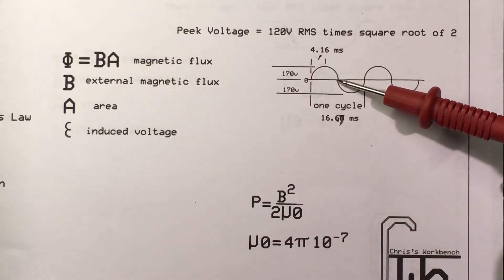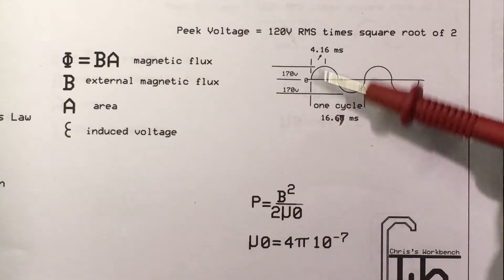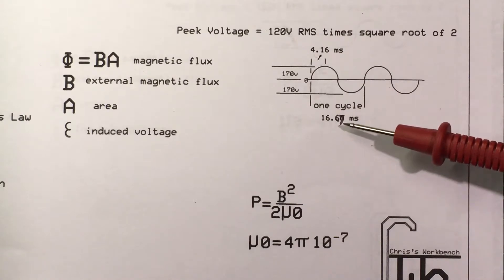Then back down to zero, and then it rises up in the other direction to 170 volts in about four milliseconds, and then back down to zero. This whole cycle is going to take about 16.67 milliseconds.